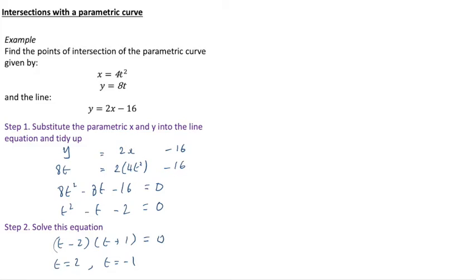So what that means is we have the parameters for the points that are common to our initial curve and to the line because we put the parameterized versions of x and y into the line so these values of t satisfy both.